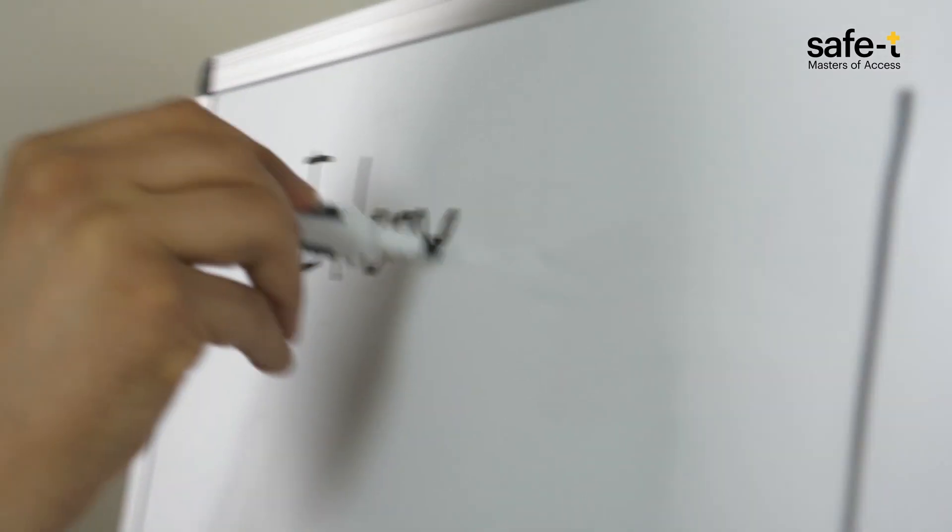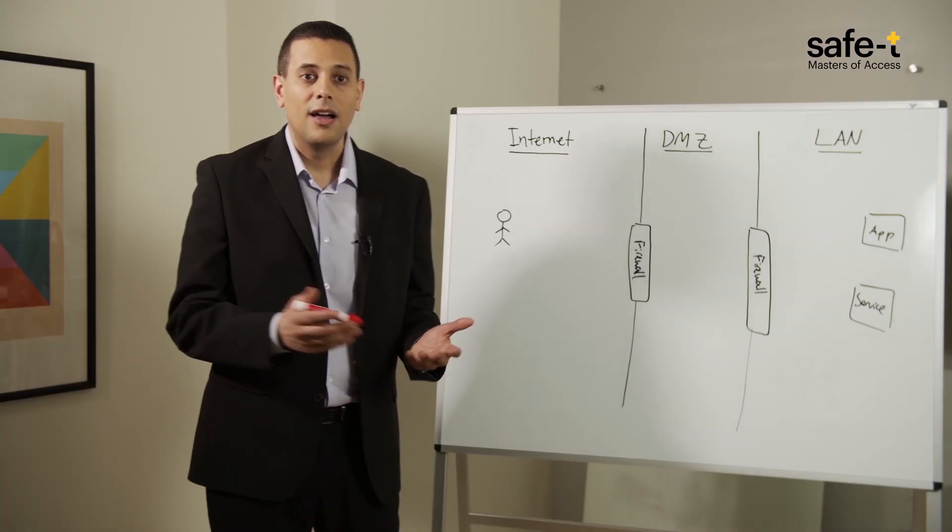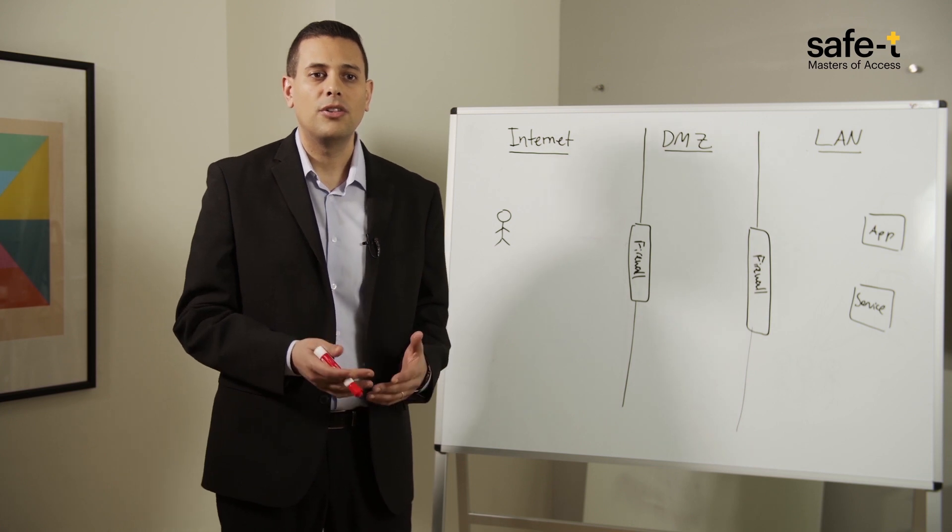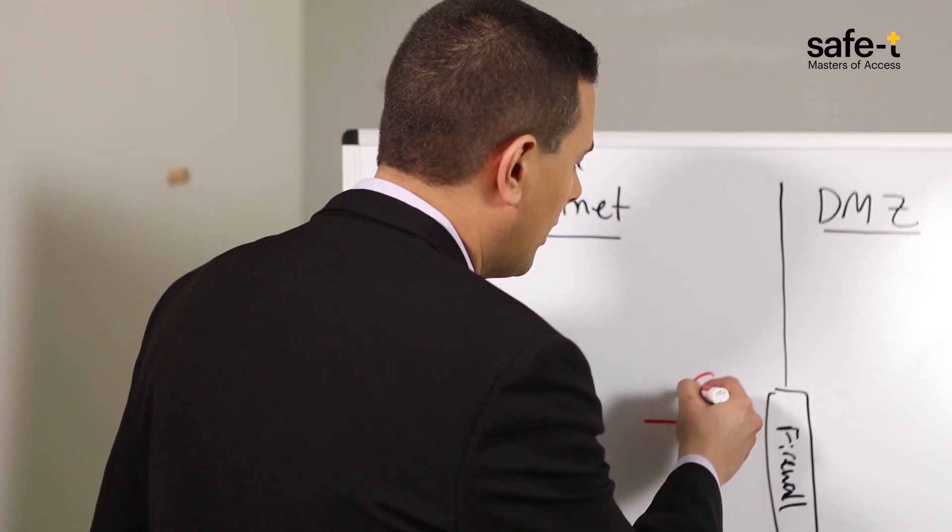We start by looking at the perimeter of the organizational network and examining the internet footprint. That is, every single entry point that has an open port, and we close it by blocking all inbound traffic. This way, the organization becomes seemingly offline, completely invisible and inaccessible to anyone over the public internet.